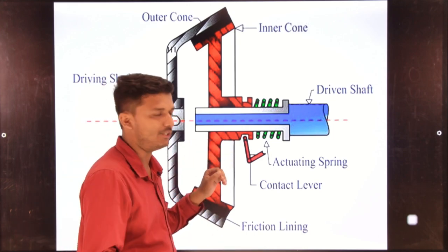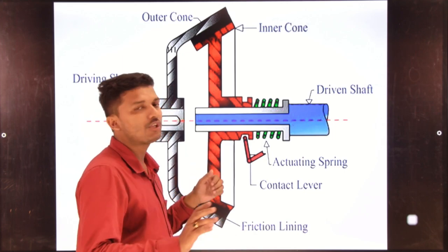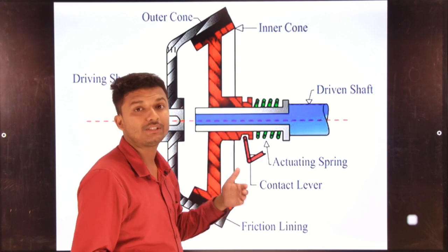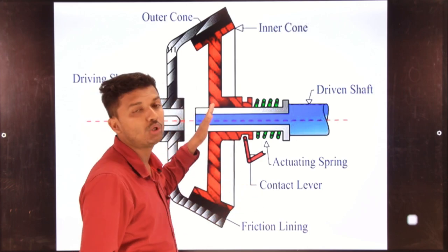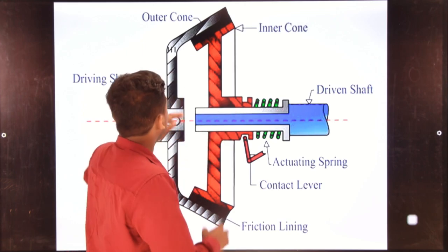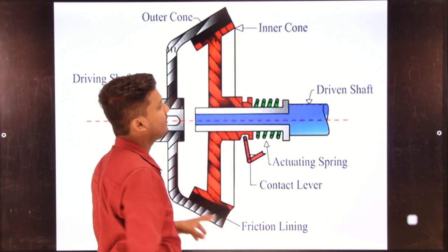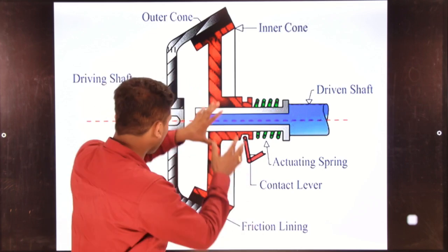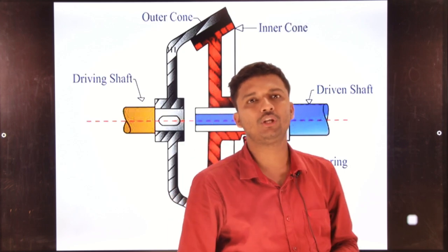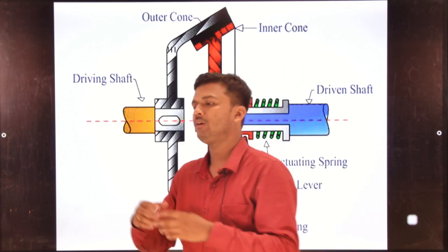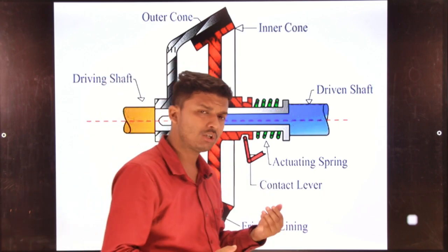When the driver presses the clutch pedal, at that time the clutch gets disengaged. When going into the engaged system, when you release the clutch, the clutch gets engaged with the help of the friction lining and the inner cone, which connects with the outer cone and then to the flywheel, allowing torque flow to take place.